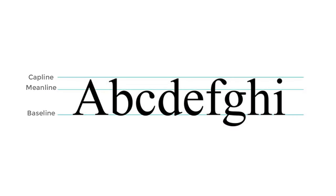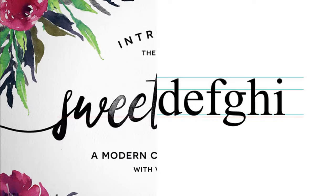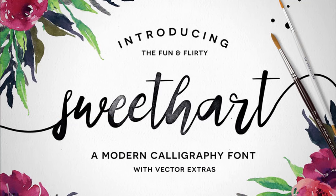Let's begin with the baseline. Every letter sits on a baseline. This is that invisible line we'd always imagine as kids to help us write out a word. Use the baseline to anchor your letters so you know where to place them in any design. Baselines can be straight and rigid or bouncy and energetic, like this sweetheart font for more appeal.